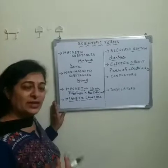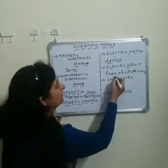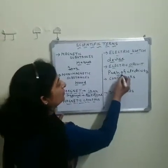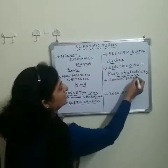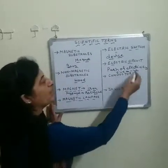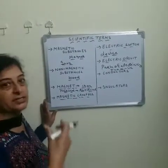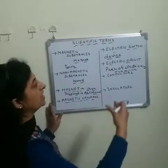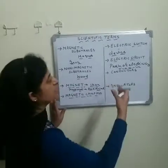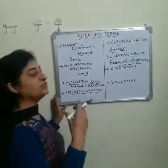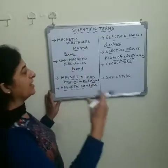Electricity always flows from the positive terminal to the negative terminal. This is the path of electricity — the electric circuit. So an electric circuit is a path on which electricity can flow, and an electric switch is a device which is used to turn on and off the electric current.